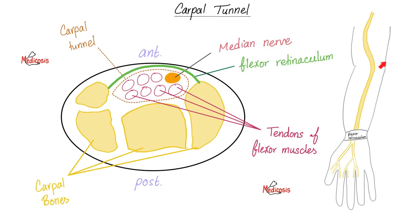This is the arm, this is the elbow joint, this is the forearm, this is the flexor retinaculum, and this is the palm of the right hand. The carpal tunnel is here — it's a tunnel in the carpal bones. These are the carpal bones, here's the carpal tunnel, and this is the flexor retinaculum. This is anterior, flexor surface; this is posterior, extensor surface.